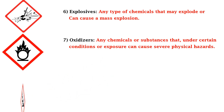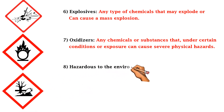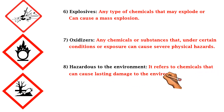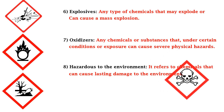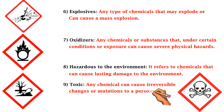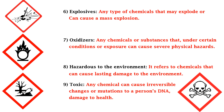The eighth type is hazardous to the environment — it refers to chemicals that can cause lasting damage to the environment. The last type is toxic hazards — any chemical that can cause irreversible change or mutations to a person's DNA, damaging their health. So those are the nine commonly identified chemical hazards found at the workplace and in our daily life.